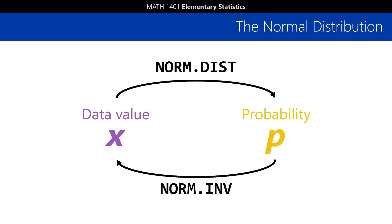But with NORM.INV, you know the cumulative probability, and it'll tell you the data value that corresponds to it.